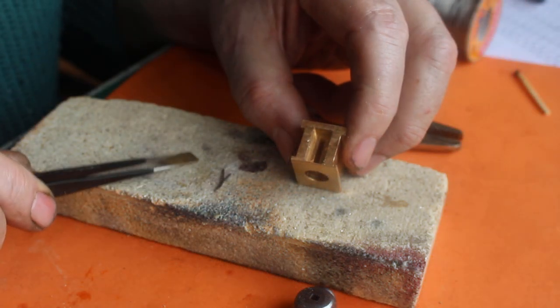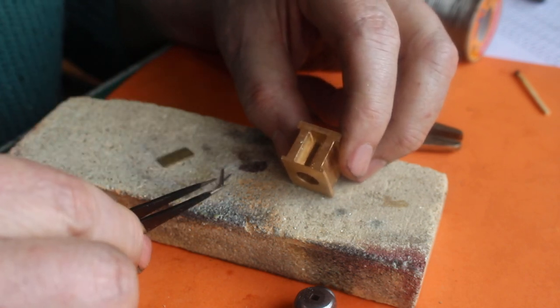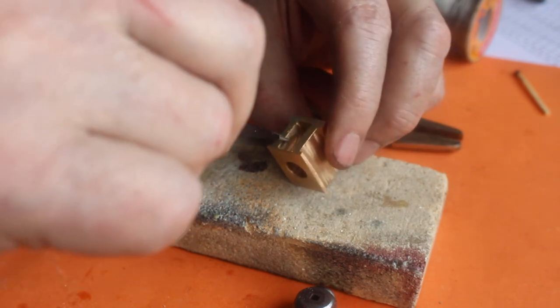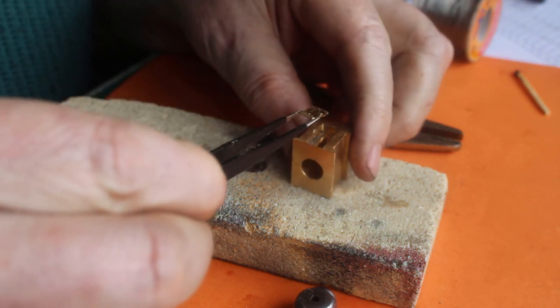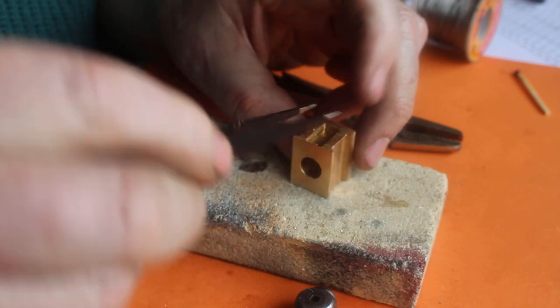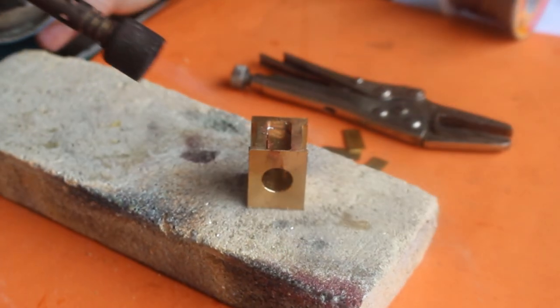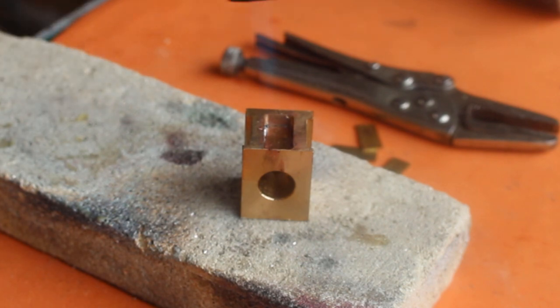We need to solder a little brass strip into the bottom of there to cover up that slot. So I'm just going to drop in a couple of bits of solder, this is flux cord solder and we'll drop that in and warm it up. Leave that to cool off.